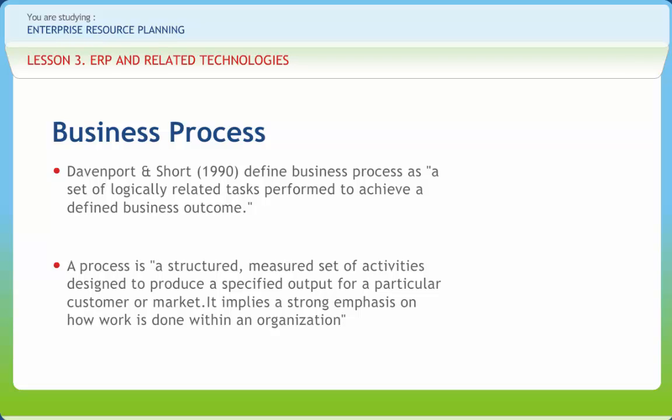Hammer (1990) considers information technology as the key enabler of BPR, which he considers as radical change. He prescribes the use of IT to challenge the assumptions inherent in work processes that have existed since long before the advent of modern computer and communications technology. Although BPR has its roots in IT management, it is primarily a business initiative that has broad consequences in terms of satisfying the needs of customers and the firm's other constituents. The IS group may need to play a behind-the-scenes advocacy role convincing senior management of the power offered by IT and process redesign.